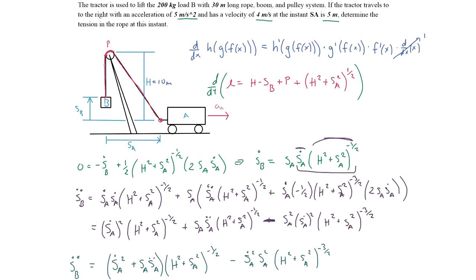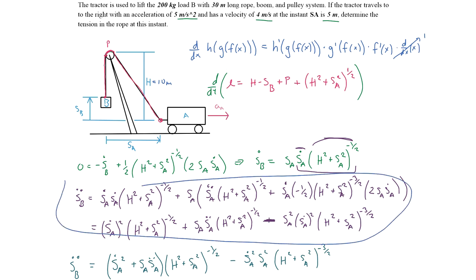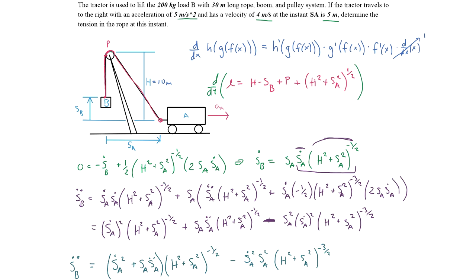As you can tell, the hardest part of this problem is performing the product rule and chain rule correctly while keeping track of all the different variables. In general, remember the concept of the chain rule and apply it where necessary. Through practice, you'll be able to get this down quite easily.